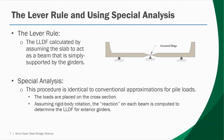There's also a procedure found in the commentary of Section 4 of the AASHTO specifications called Special Analysis. This procedure is identical to the conventional approximation approach for pile loads. The loads are placed on the cross section, the cross section is assumed to undergo rigid body rotation — just like a pile cap on a group of piles — we assume each beam acts as a pile, and we determine the reaction on each beam, taking that reaction as the live load distribution factor.